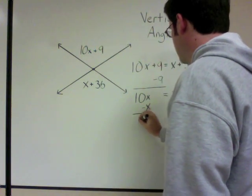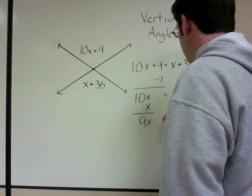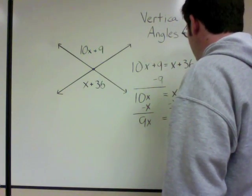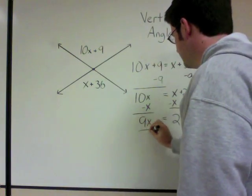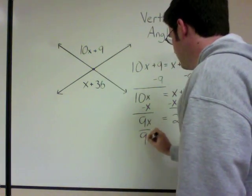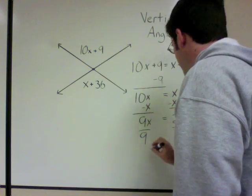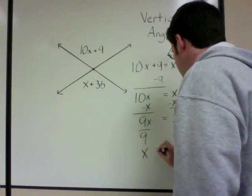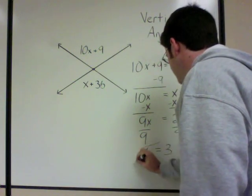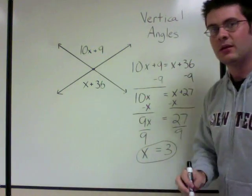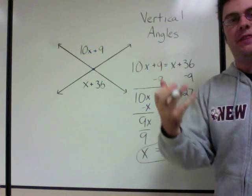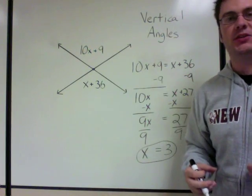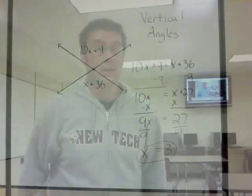That gives us 9x equals 27. Divide both sides by 9, and x equals 3. That's an algebra problem using vertical angles, and that wraps up our discussion on angle pairs — all the time we have for the Math Office today.